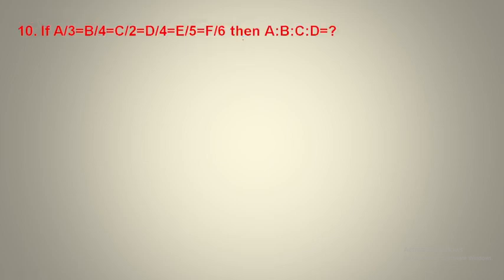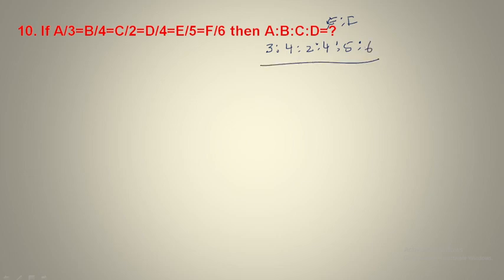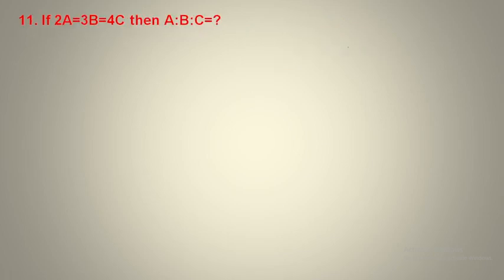Next, question number 10: a/3 = b/4 = c/2 = d/4 = e/5 = f/6. Directly read the denominators: a = 3, b = 4, c = 2, d = 4, e = 5, f = 6. So a:b:c:d:e:f = 3:4:2:4:5:6.